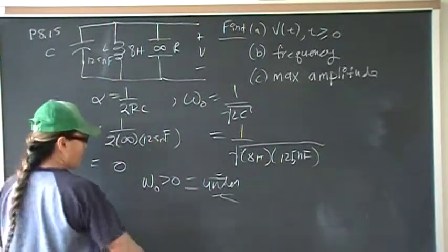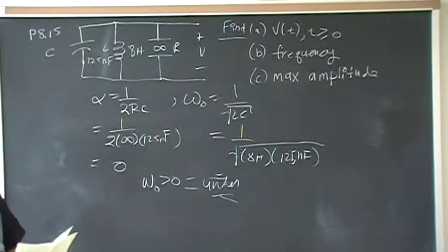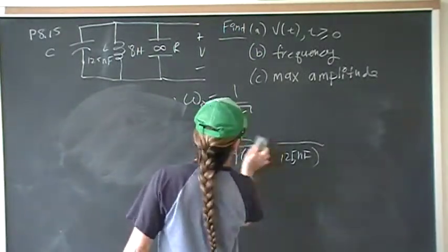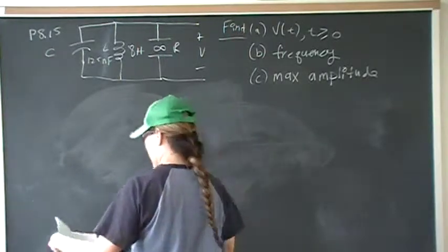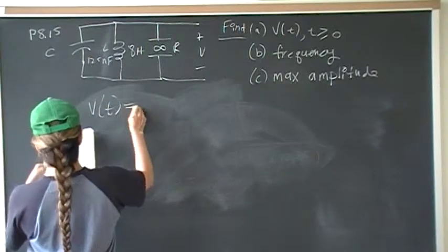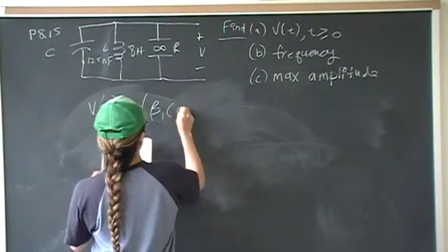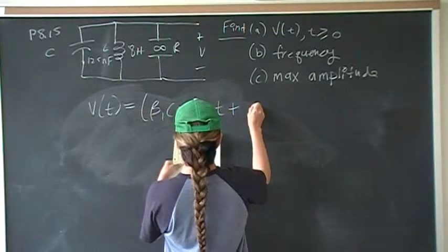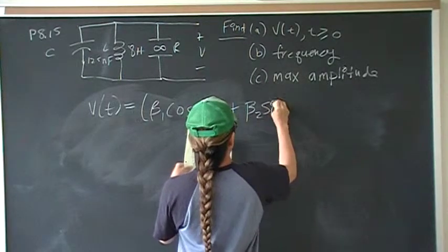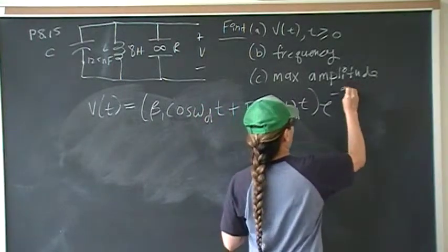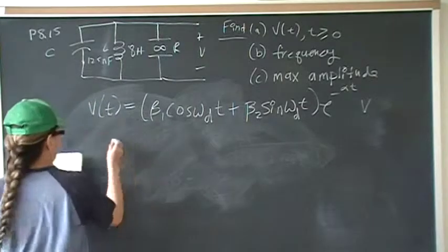So then we look up our general equations we need for the underdamp. Underdamp equations take the form of V of t equal to beta 1 cosine omega d t plus beta 2 sine omega d t to the e to the negative alpha t volts.